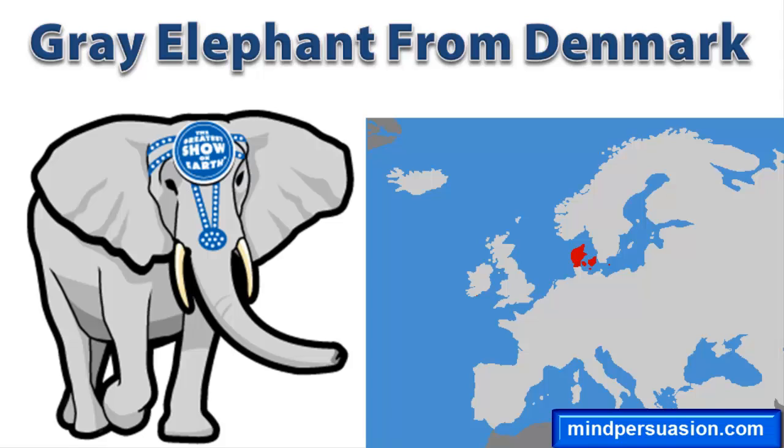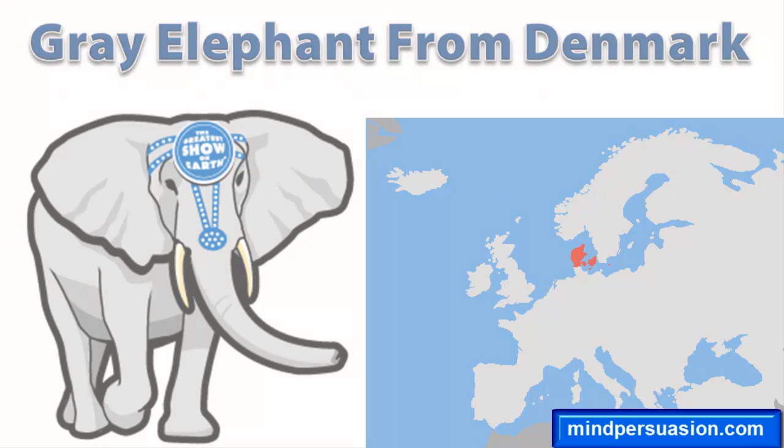First, get somebody to think of a number between 1 and 10 — for example, 6. Then get them to multiply that number by 9, which gives us 54, since 9 times 6 is 54.